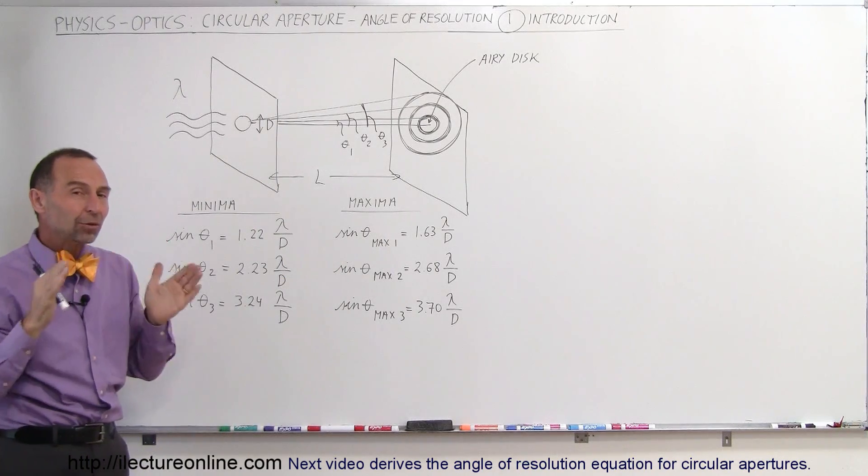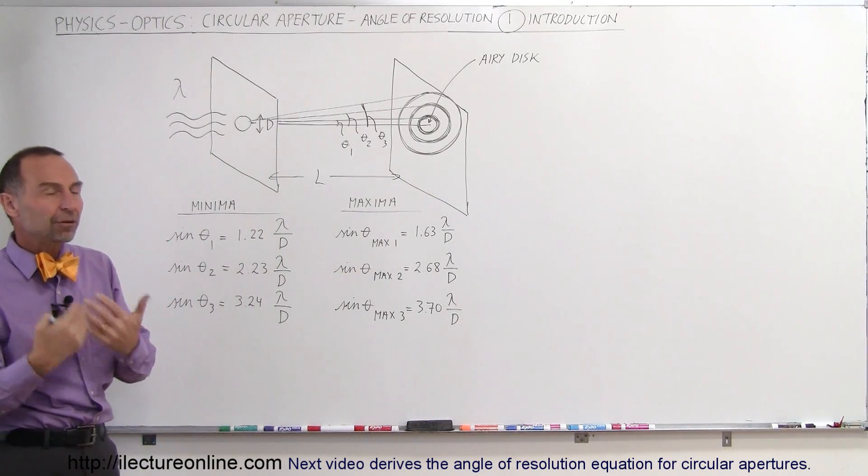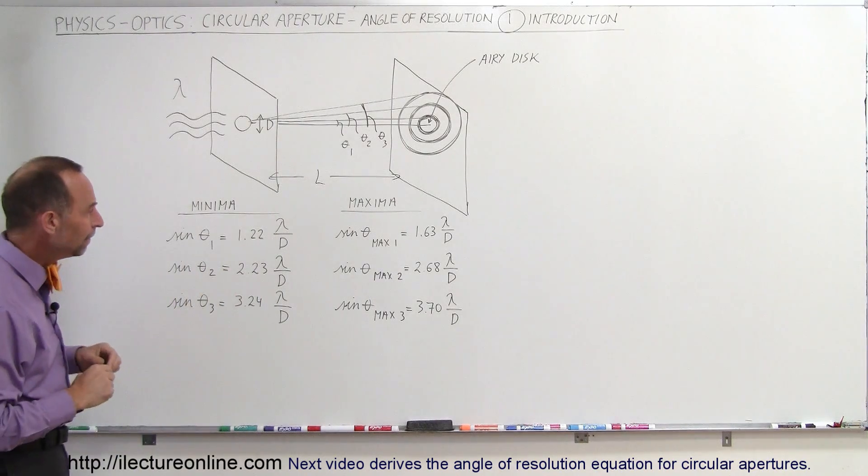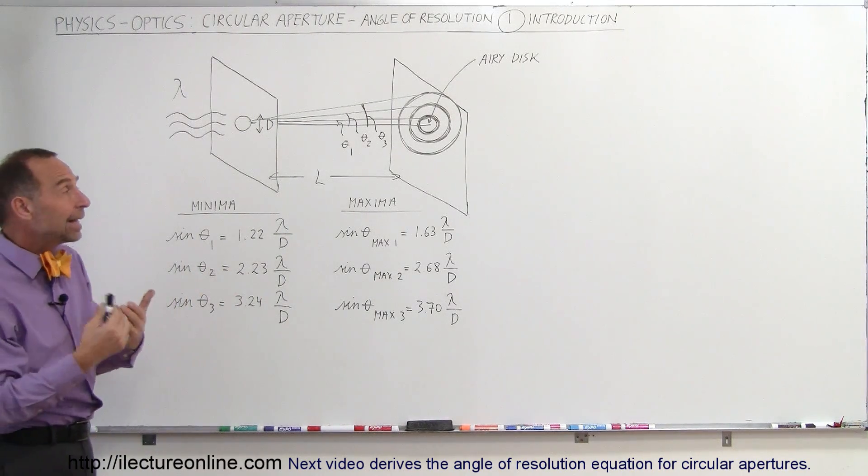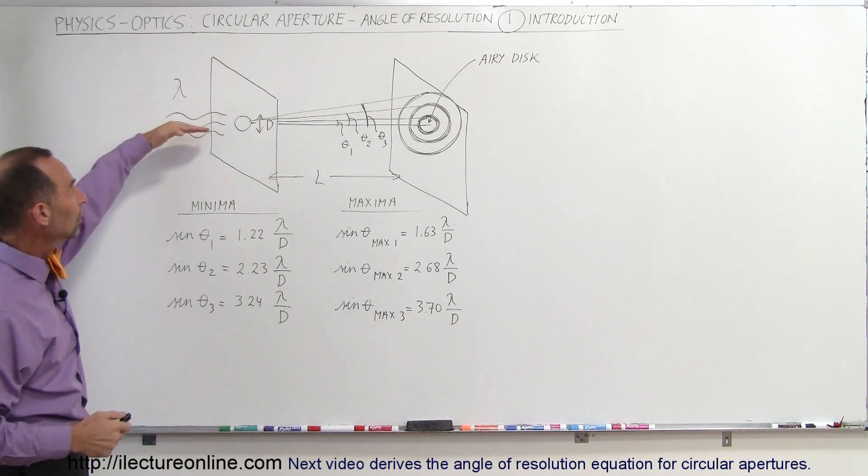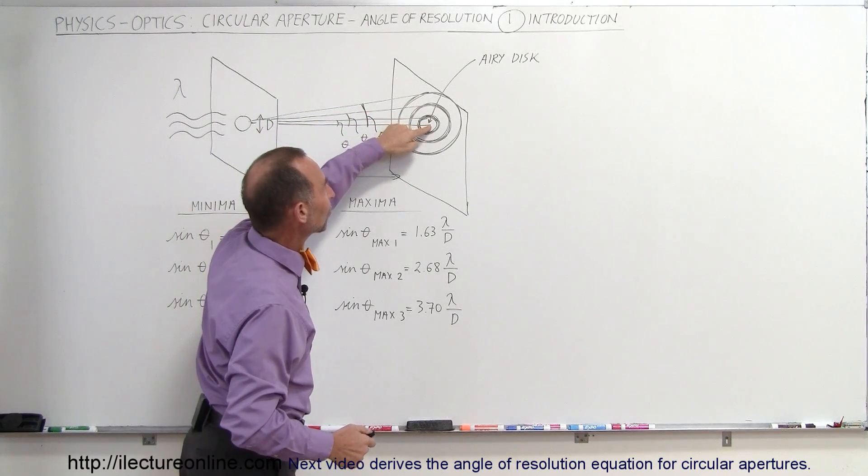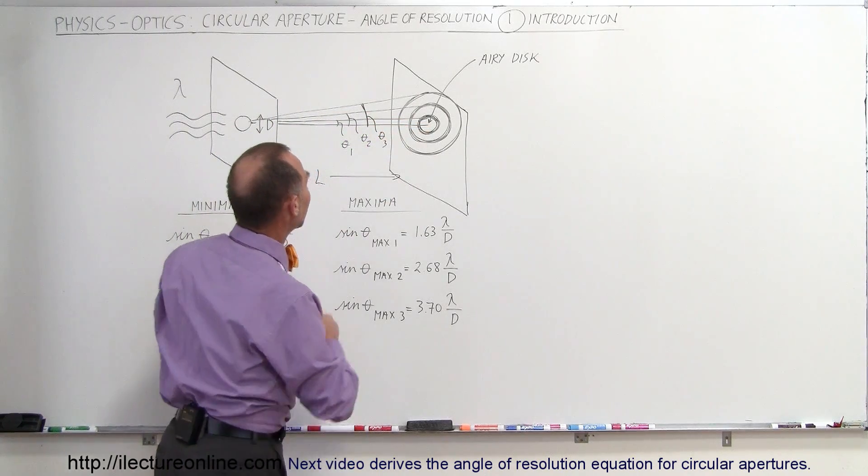Now, the mathematics behind coming up with those patterns are very complicated, they involve Bessel functions. In the next video, I'll show you how that's done. But here, the result of that is that the location, the angle with respect to the line directly across the center of the central maximum right here, the Airy disk,